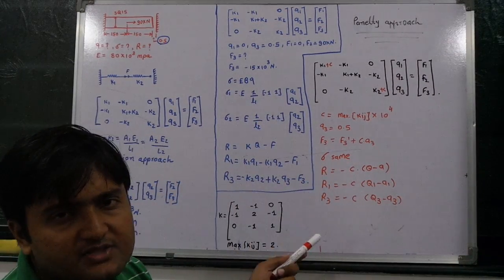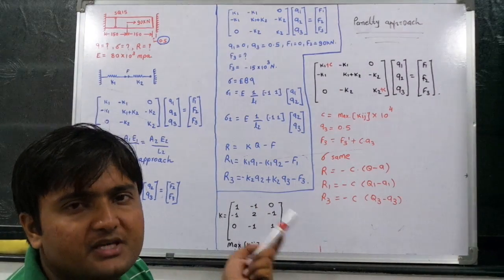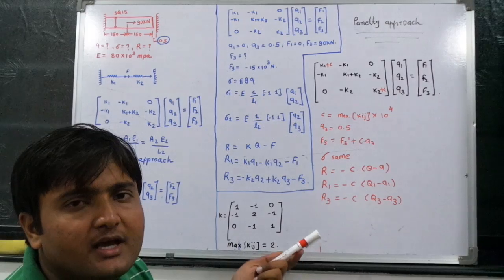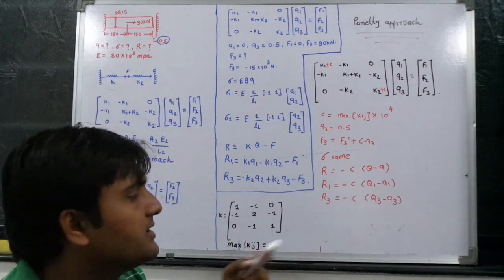The sigma remain same. Sigma is equal to E into B into Q, where E is the Young's modulus of elasticity, B is equal to 1 upon L times [-1, 1], and Q is equal to Q1 and Q2 for first element, Q2 and Q3 for second element.